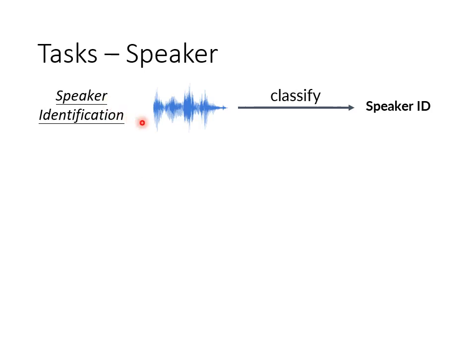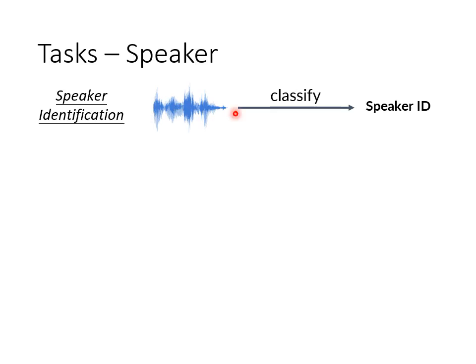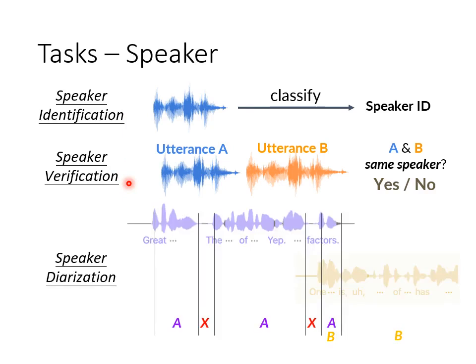For speaker-dependent tasks, we have speaker identification — input a voice signal and determine who the speaker is. We also have speaker verification — input two pieces of voice and the machine decides whether they came from the same person or not. Although speaker identification and speaker verification sound similar, they are two different tasks. We also have speaker diarization — input a voice recording of a meeting with multiple speakers who may interrupt each other or talk simultaneously. Your machine should identify which part comes from speaker A, which from speaker B, and which parts have both speakers talking at the same time. That is speaker diarization.